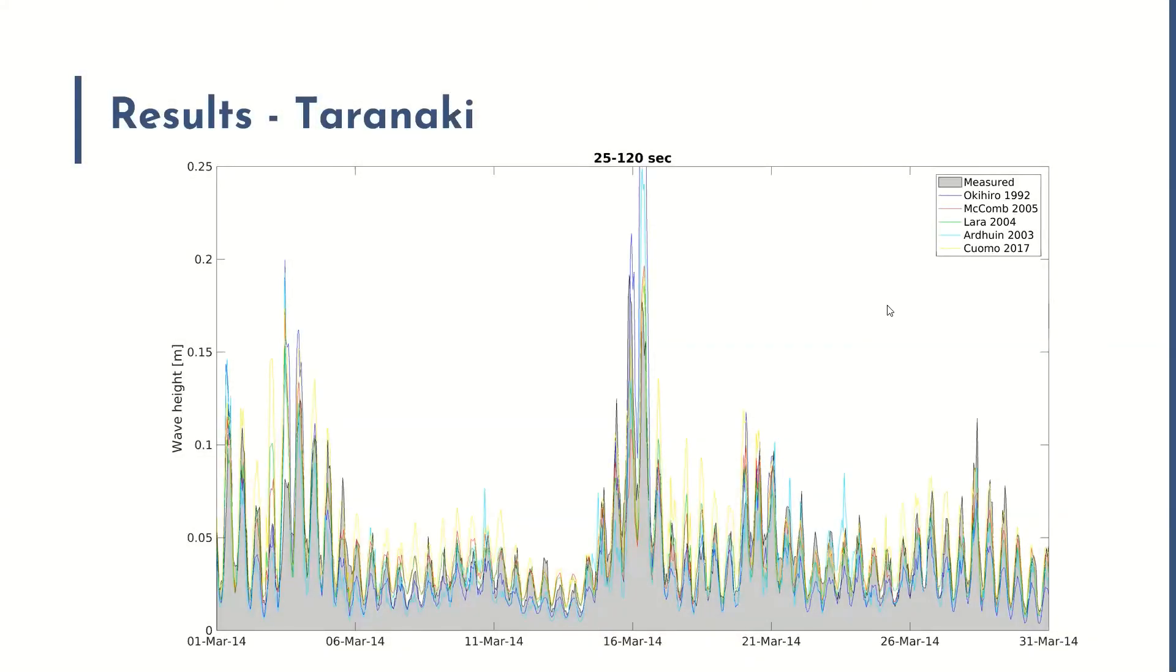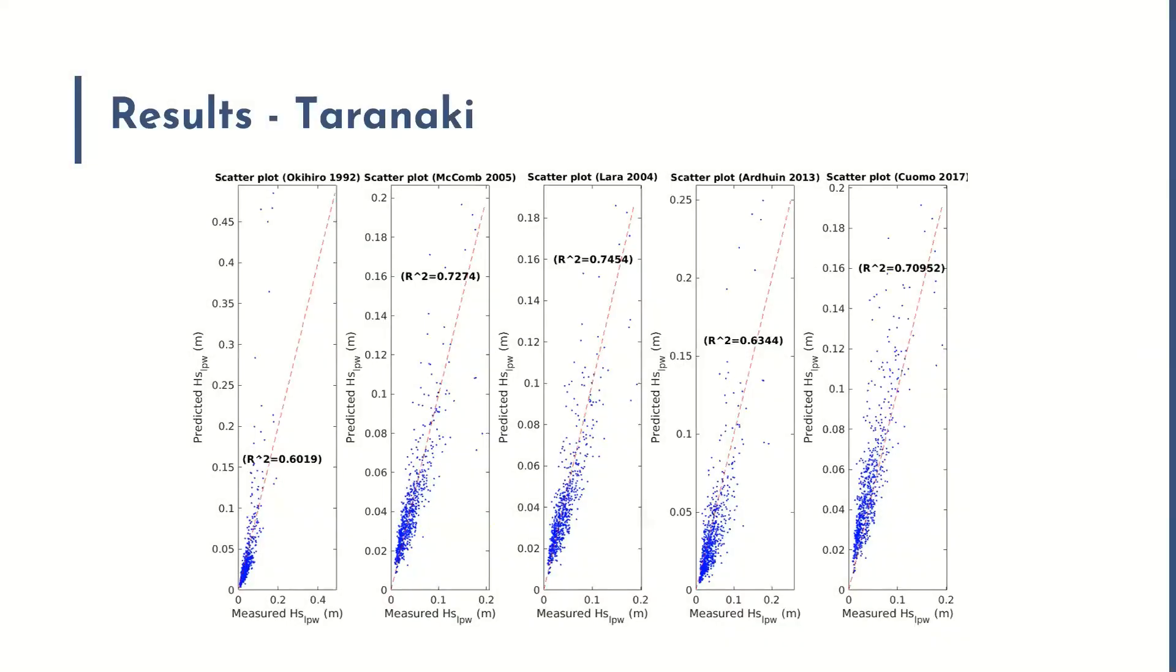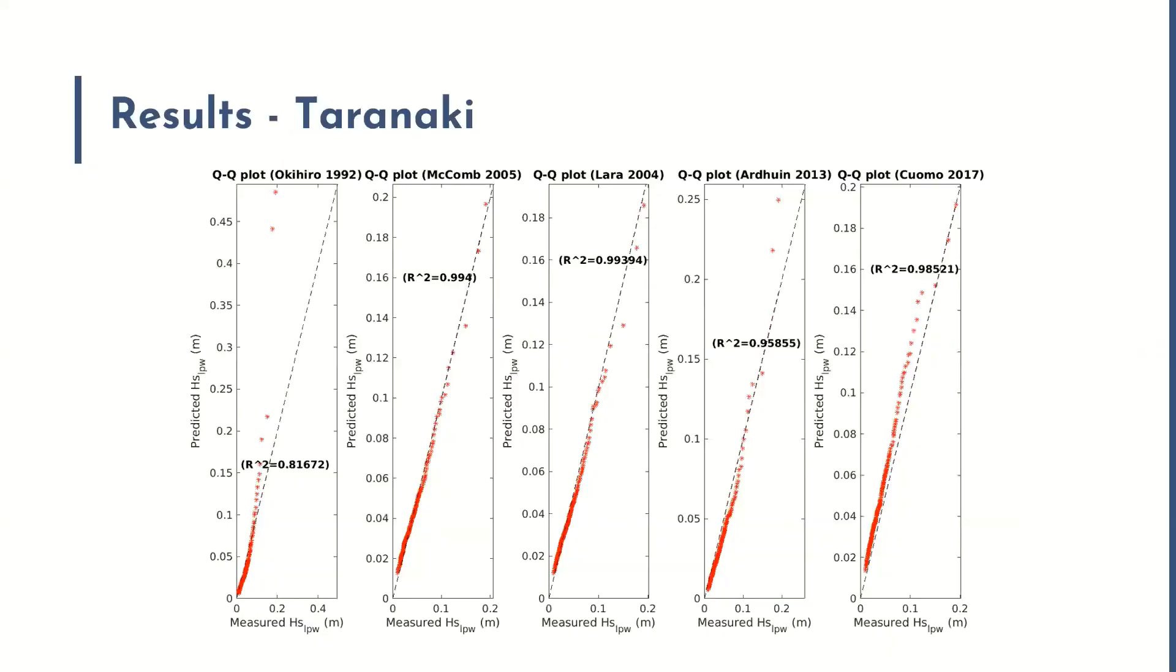Looking at the same data from New Plymouth, once again we see this very strong tidal modulation occurring, around about twice as big at high tide as opposed to low tide. Scatters are a bit broader than they were in Gihon, and when we look at the QQ plots, once again McComb and Lara have the best fits to the measured data. Okihiro and Kuomau are really not providing guidance that would be relied on. We've got really not capturing the non-linearities within the sea states that we're seeing.